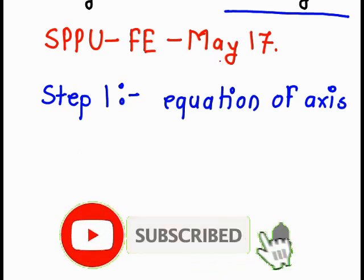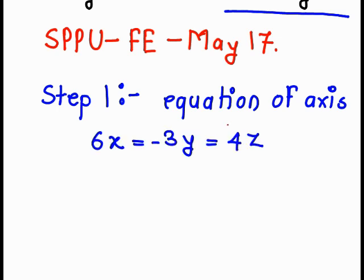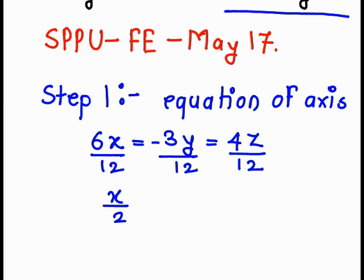First of all, we write the given equation of an axis in a standard format. We want to remove the coefficients 6, minus 3, and 4. So for that, we divide by 12. Dividing each term by 12, we get an equation: x upon 2 is equal to...